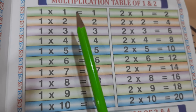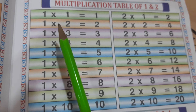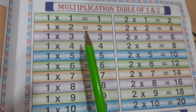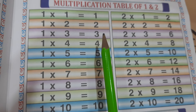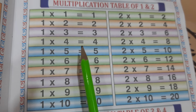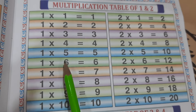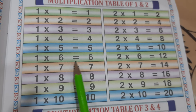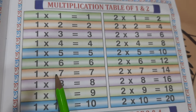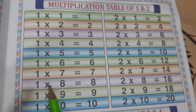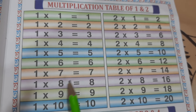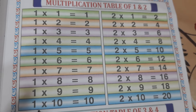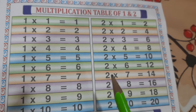1 1s are 1. 1 2s are 2. 1 3s are 3. 1 4s are 4. 1 5s are 5. 1 6s are 6. 1 7s are 7. 1 8s are 8. 1 9s are 9. 1 10s are 10.